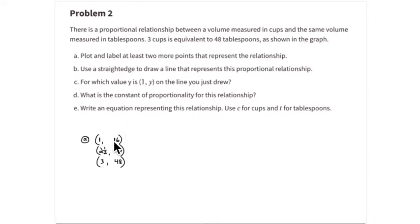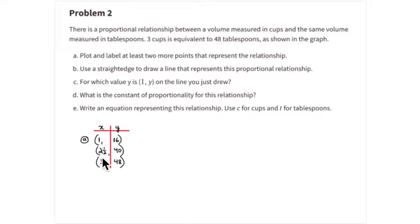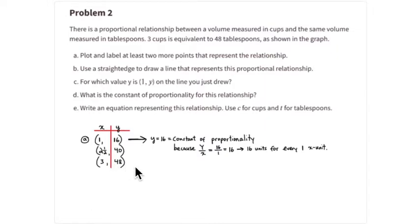I'll use one cup, two and a half cups, and three cups to show how writing coordinates for a graph is the same as filling in a table. Starting with three cups equals forty-eight tablespoons, I want to find the value per cup. Using one cup instead of three cups, that's one third as much, so one third of forty-eight is sixteen — forty-eight divided by three equals sixteen. That sixteen is the constant of proportionality because y divided by x equals sixteen divided by one equals sixteen.